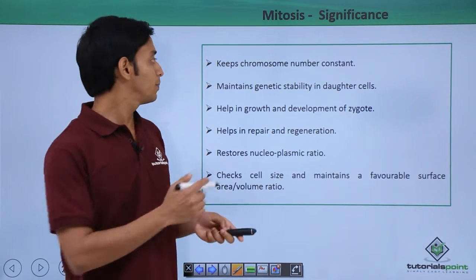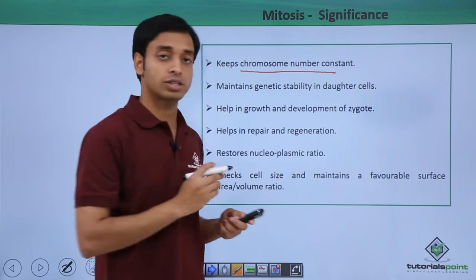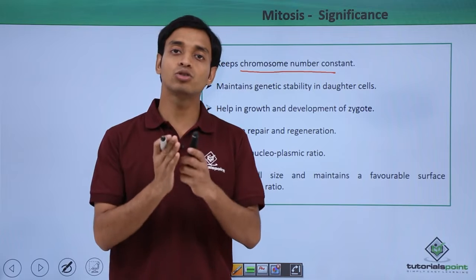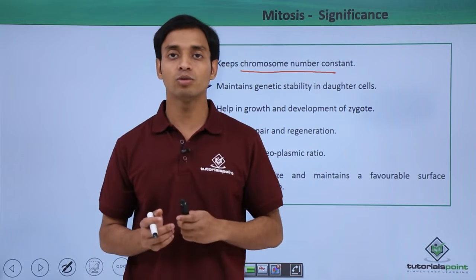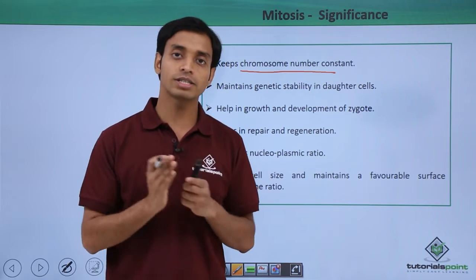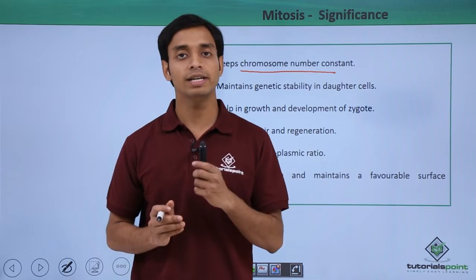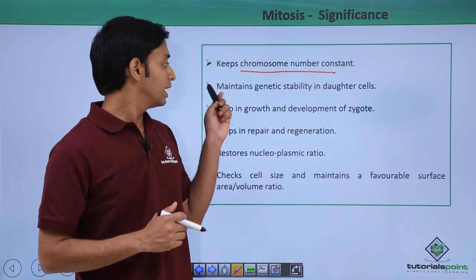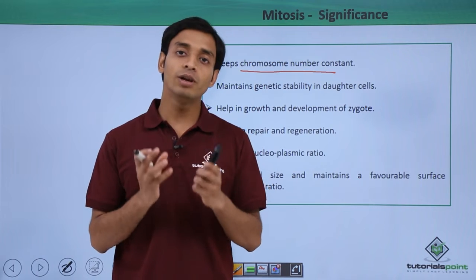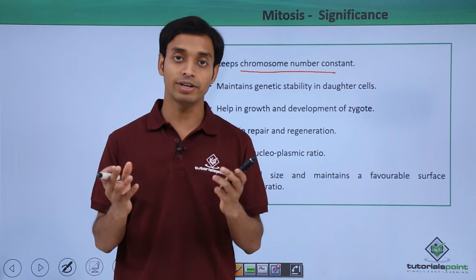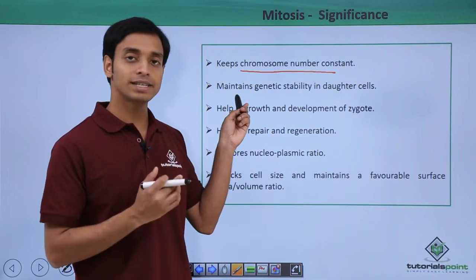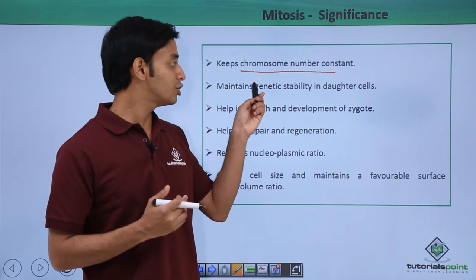The first and very important significance of mitosis is that it keeps the chromosome number constant. Since mitosis is a type of equational division where the parent cell divides into two equal daughter cells, the number of chromosomes present in the parent and in each of the daughter cells remains the same. Hence the chromosome number is constant. This maintains genetic stability in the daughter cells — the two daughter cells formed will be mostly genetically identical, like clones.